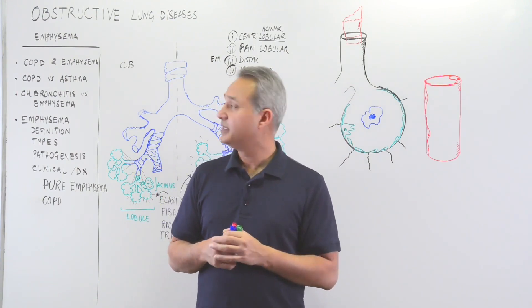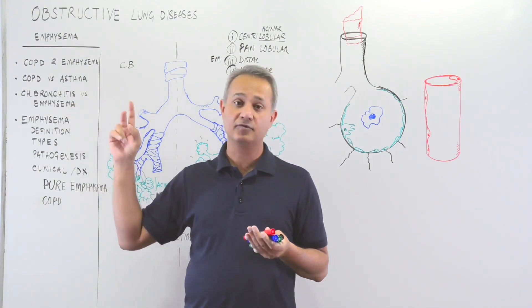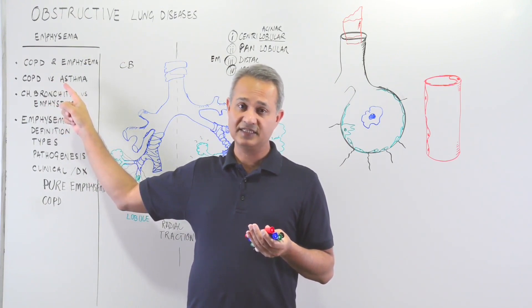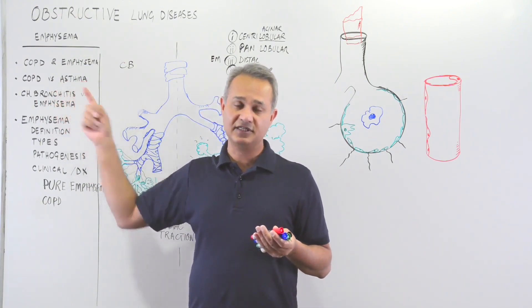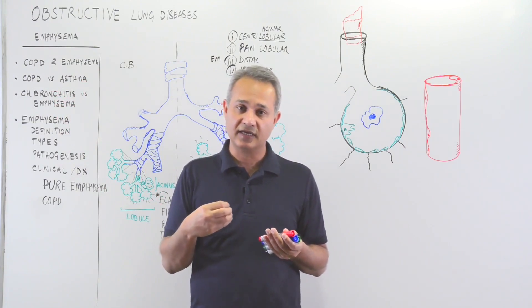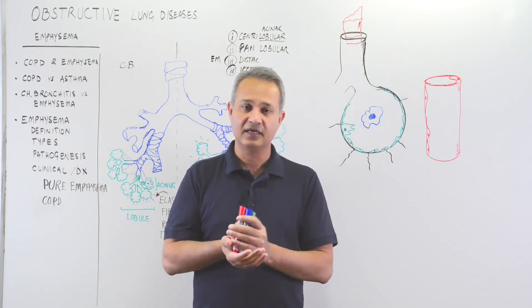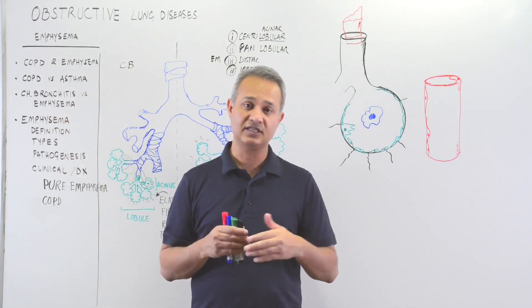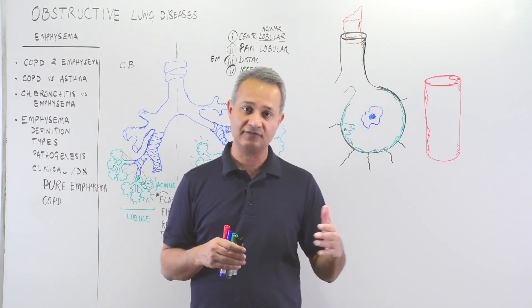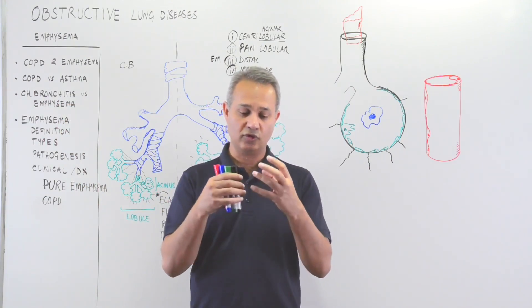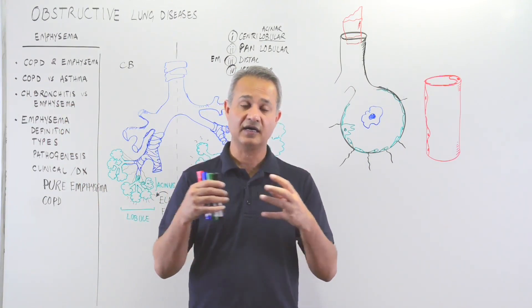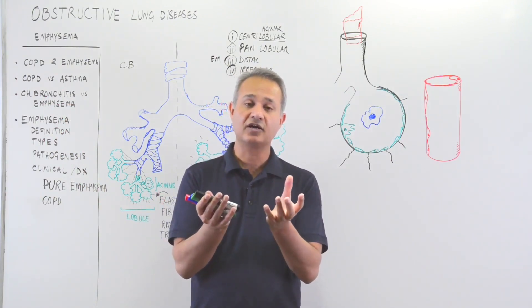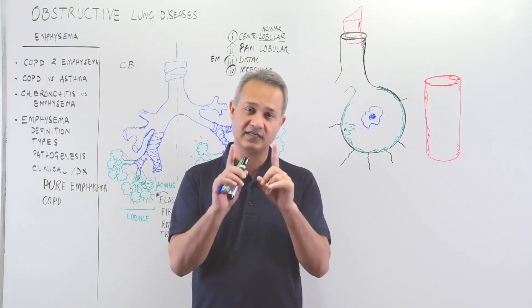COPD is different from asthma, though both are obstructive lung diseases. Asthma is reversible - you can administer drugs and heal or temporarily reverse it. COPD is not reversible. It's a progressive, permanent, destructive disease. Once it causes collapse or abnormal dilatation of the areas, that dilatation cannot be reversed. That is the primary difference.